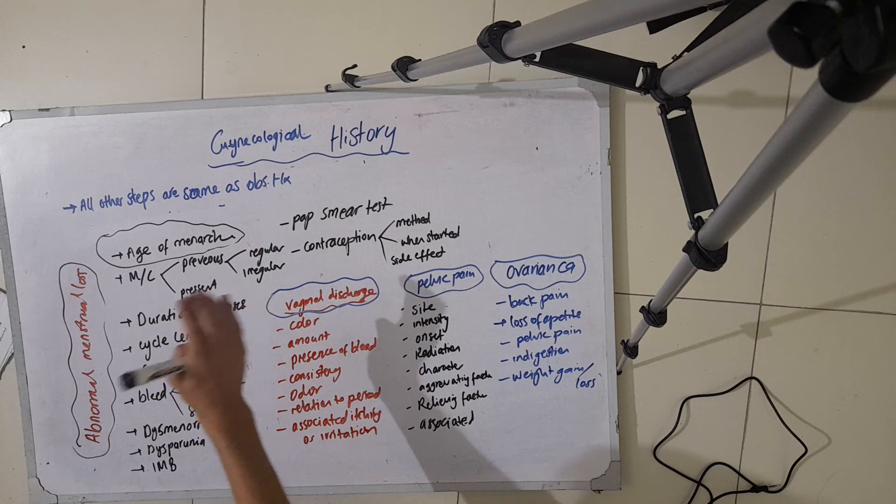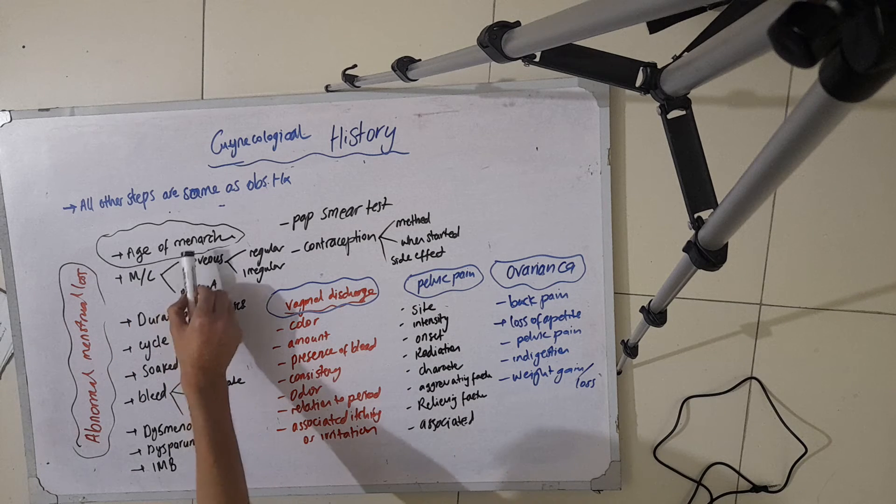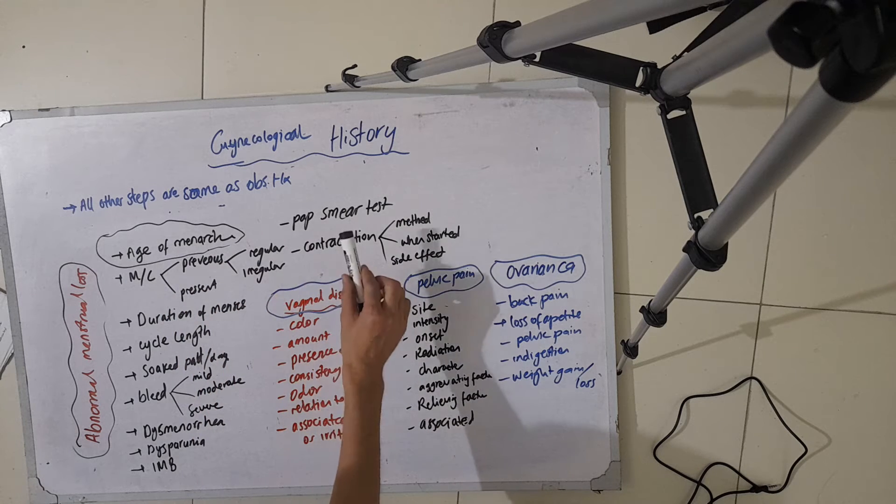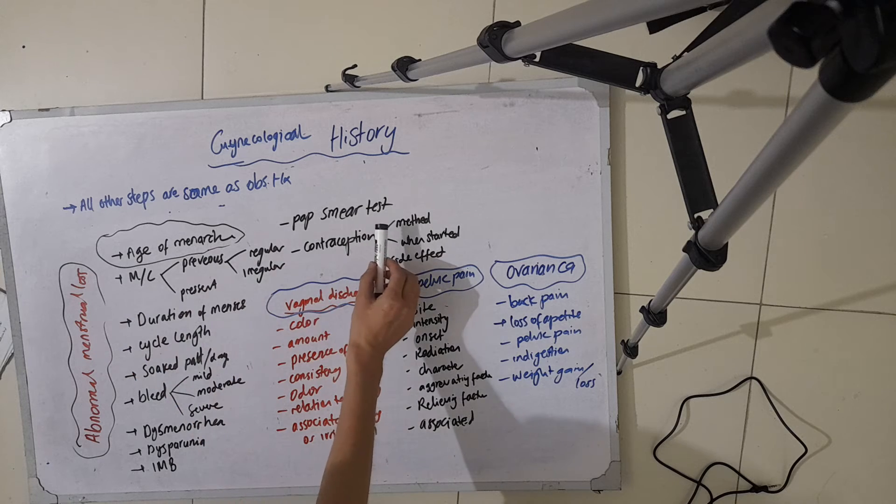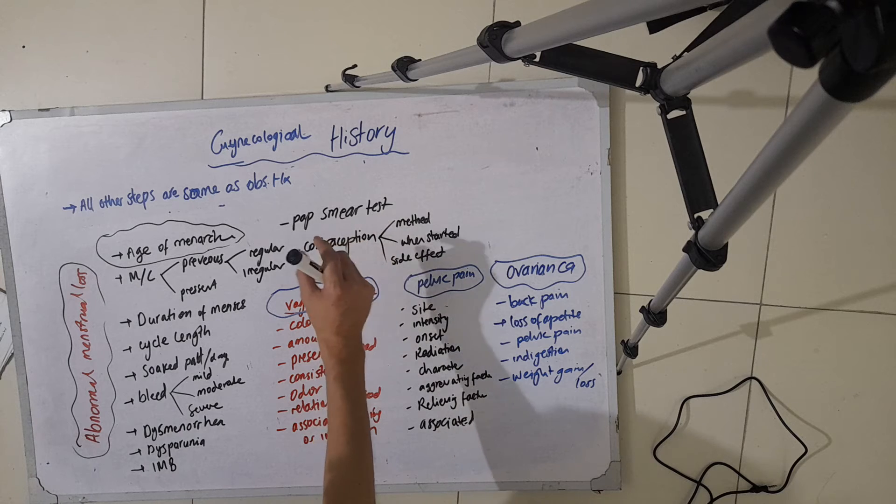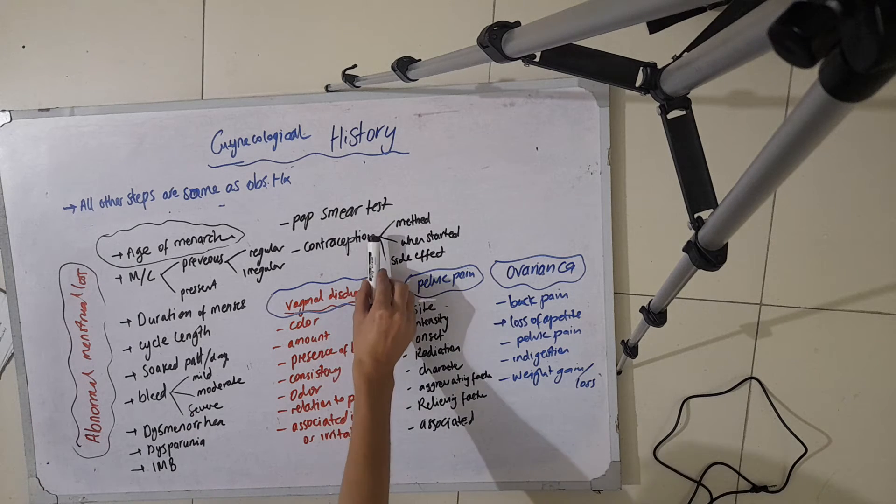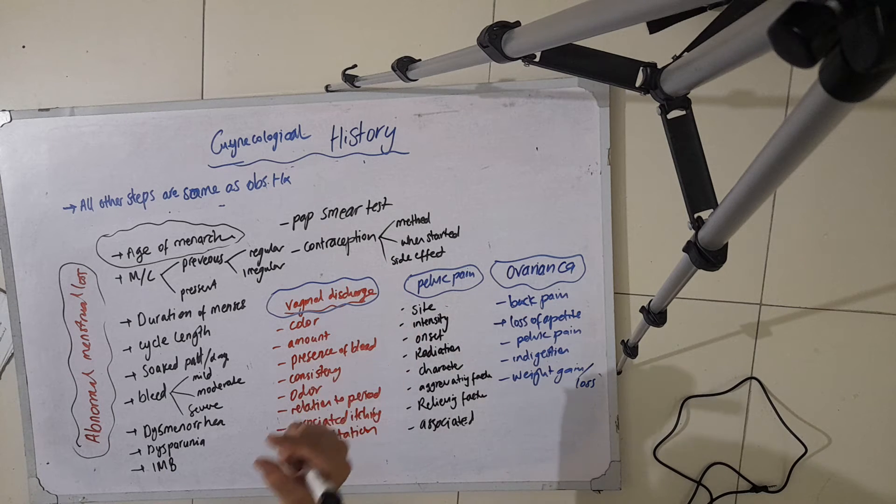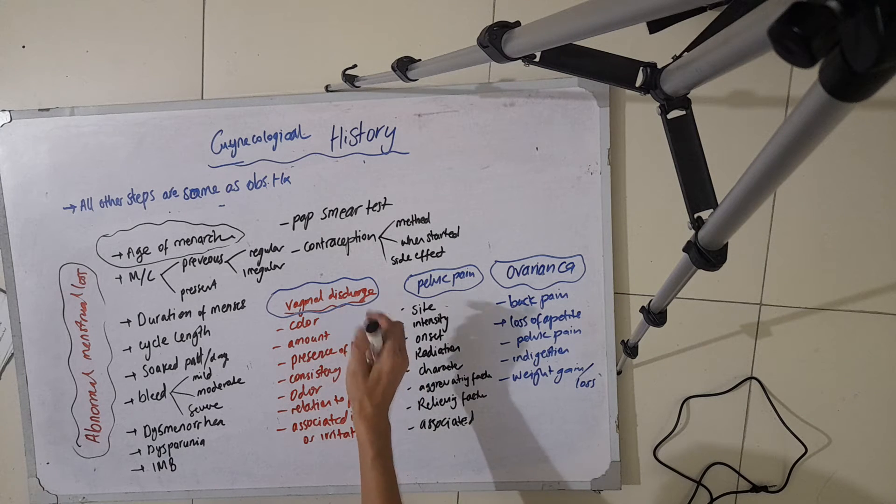Points that should be added in the bio data include the age of menarche, whether they have had a PAP smear test or not, and contraception. You also ask about the contraception method they use, when they started using it, and any side effects they experienced from using contraception.